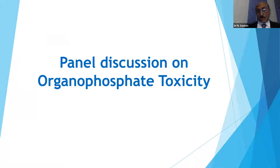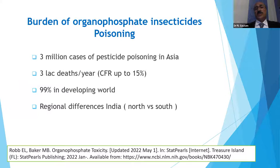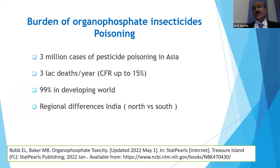OPC poisoning is widespread, especially in Asian countries. We see approximately three million cases globally. Case fatality rates vary from two to twenty-five percent but are quite high on average. It is predominantly a problem in developing countries. There are regional differences — in northern India we see more aluminium phosphide, but OPC is still common; in the south, OPC poisoning remains very prevalent.